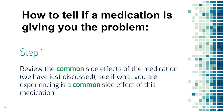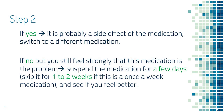Now let's talk about how to tell whether a medication is giving you the problem and what you can do. First of all, review the common side effects of this medication and find out if what you're experiencing is a common side effect. If it is, then stop the medication and you may need to switch to another medication for diabetes. If what you're experiencing is not a common side effect of the medication, then your symptoms are likely due to another medical condition or other medications.